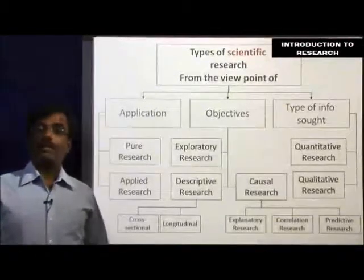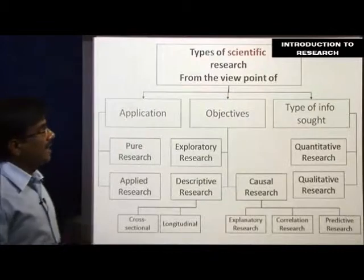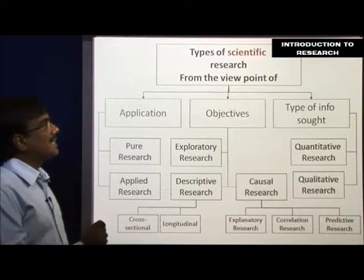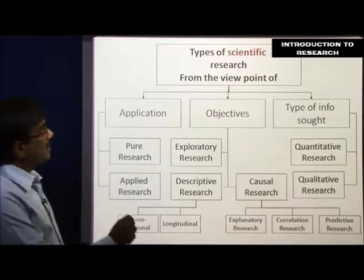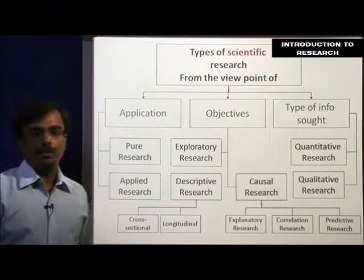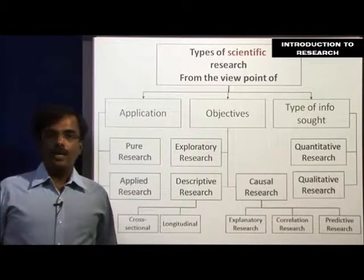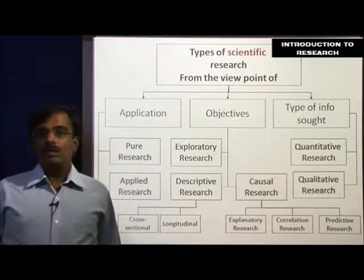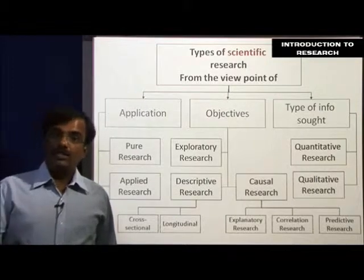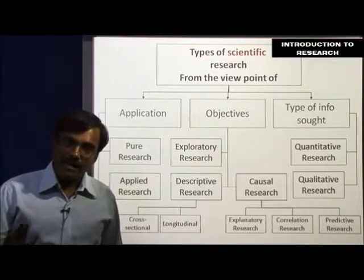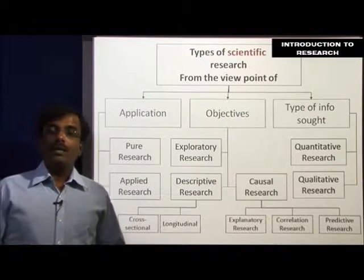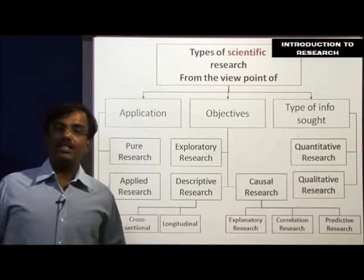Let us look at the types of research. I have made sure that there is one letter marked in red which is called 'scientific', so I have written there 'types of scientific research'. Scientific actually means the temperament or the preponderance of making decisions based on data. Research is completely bothered only about data-oriented decisioning, so let us look at data as a fundamental driver for decision making.